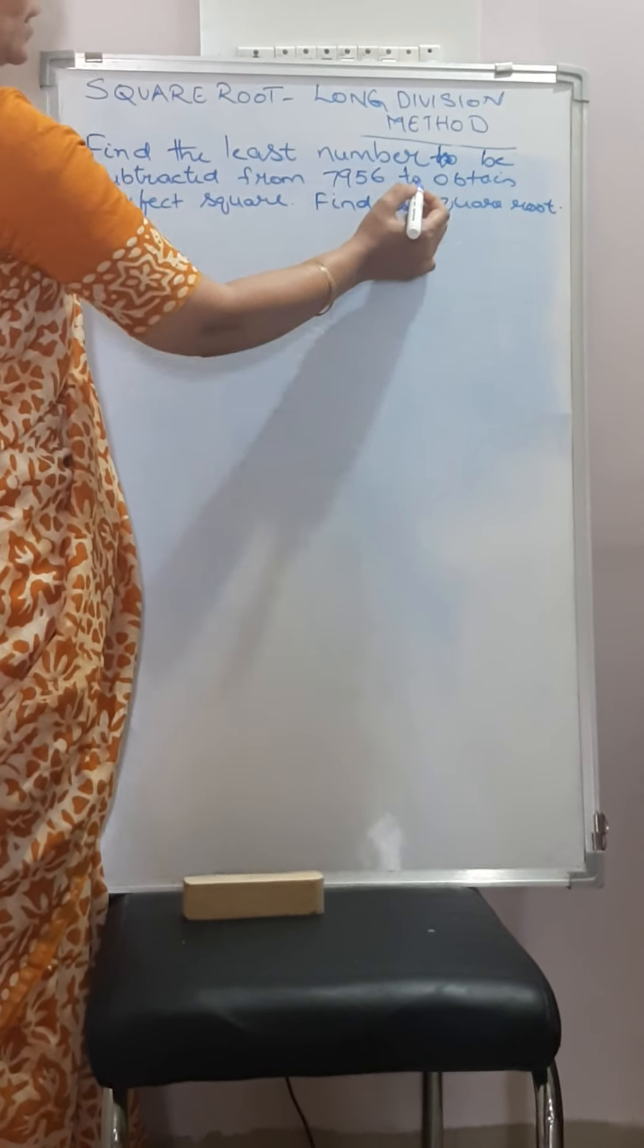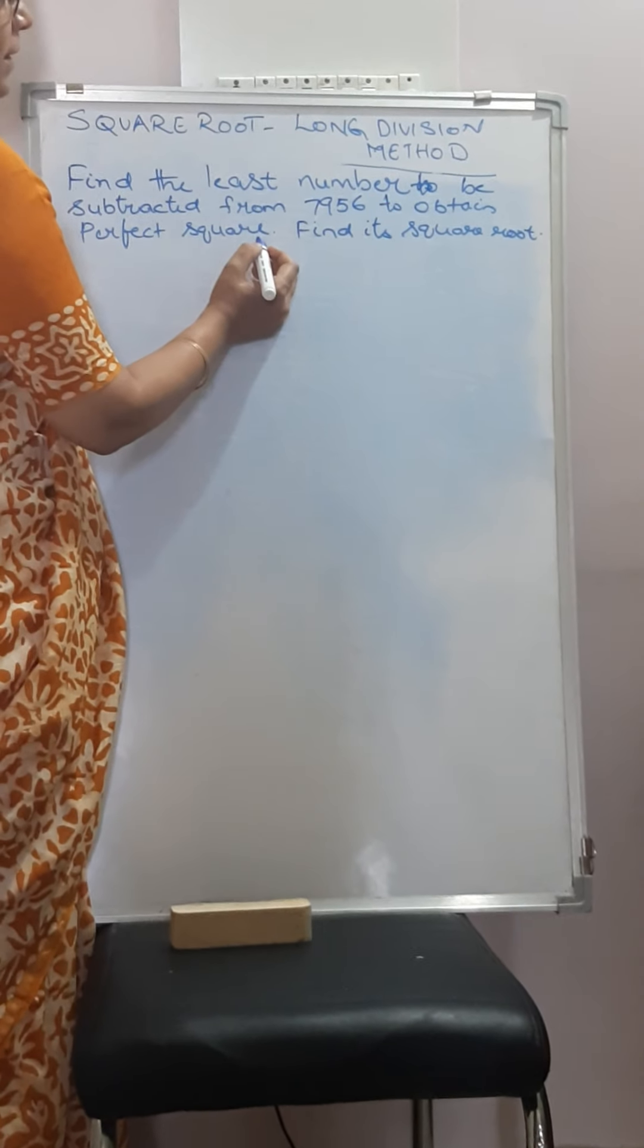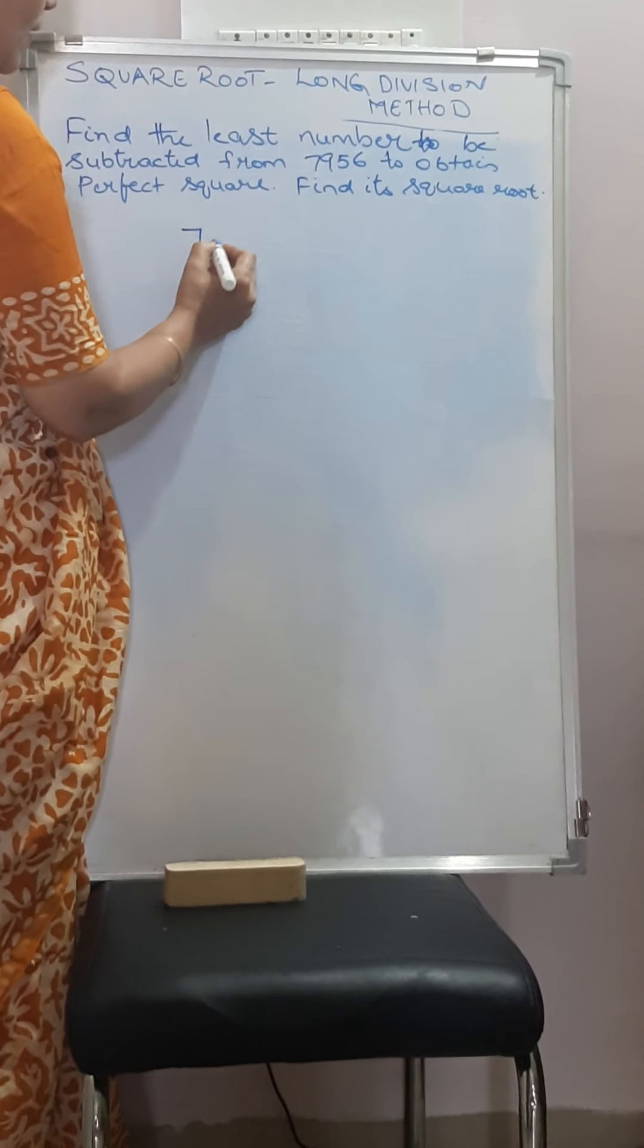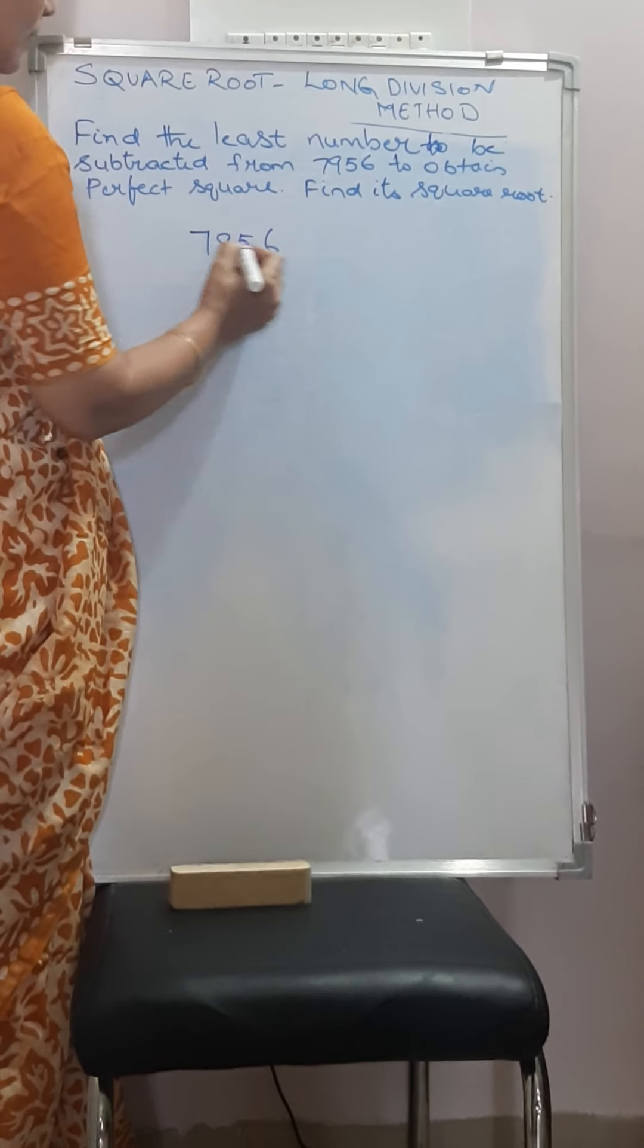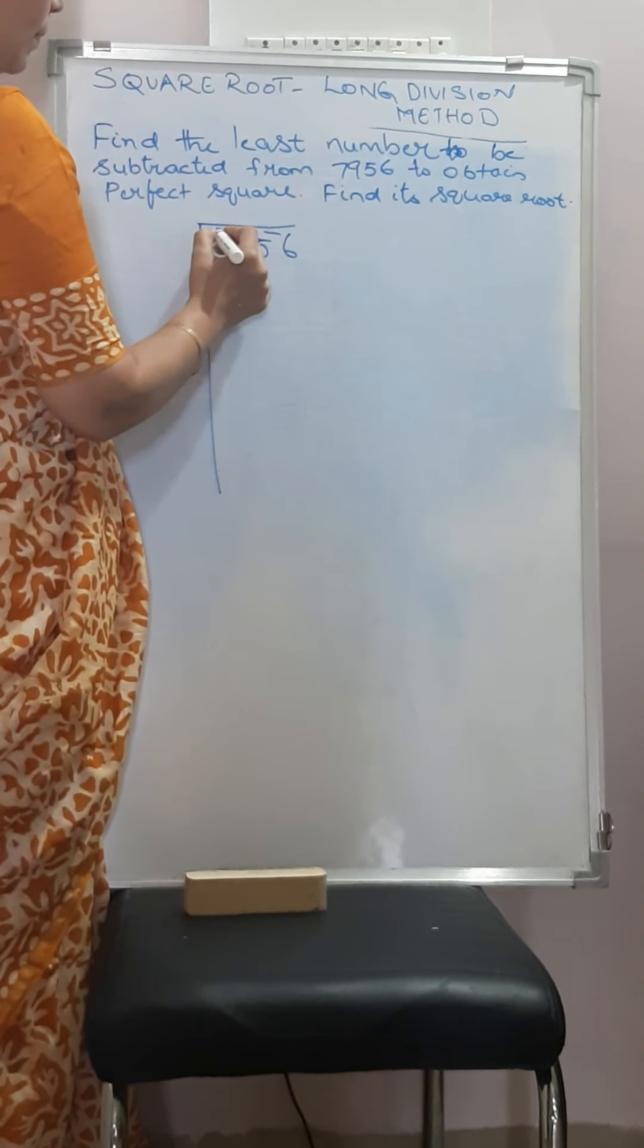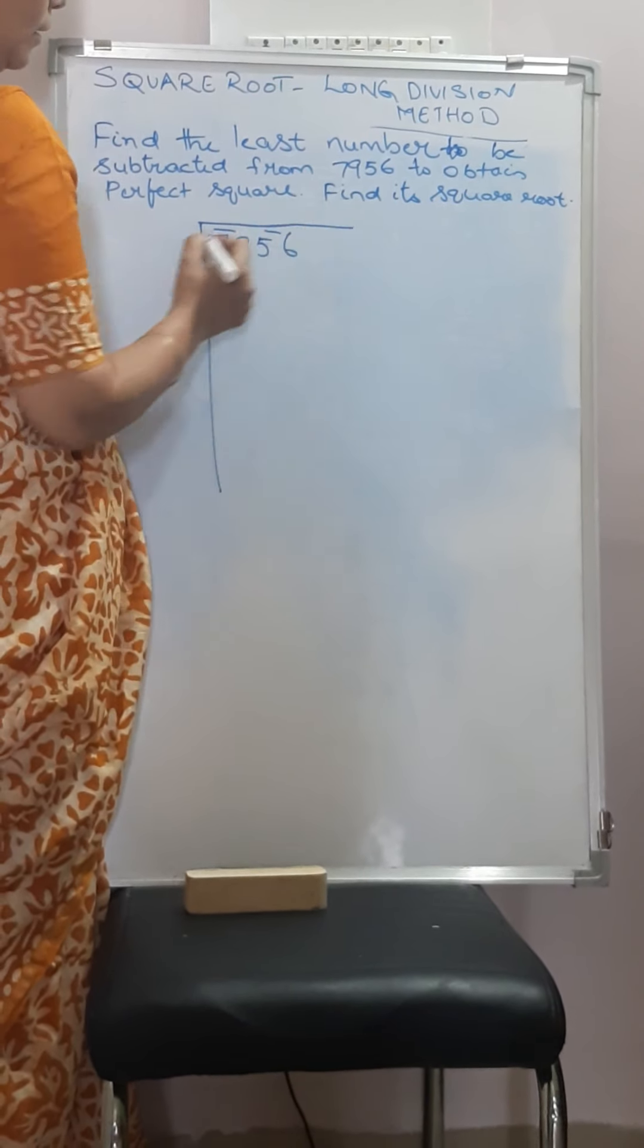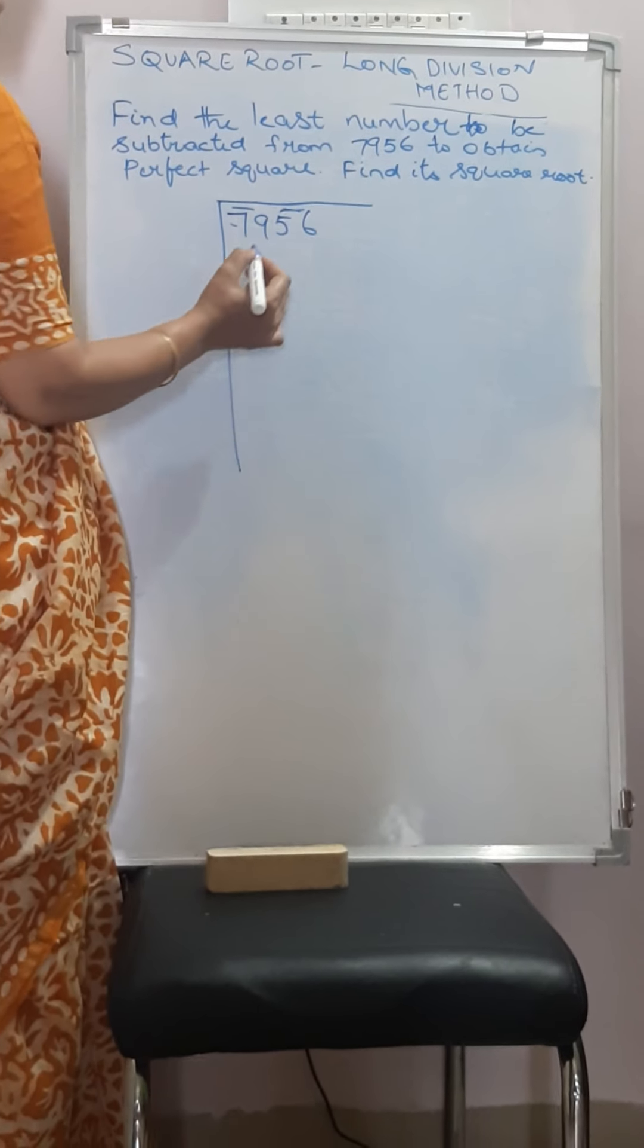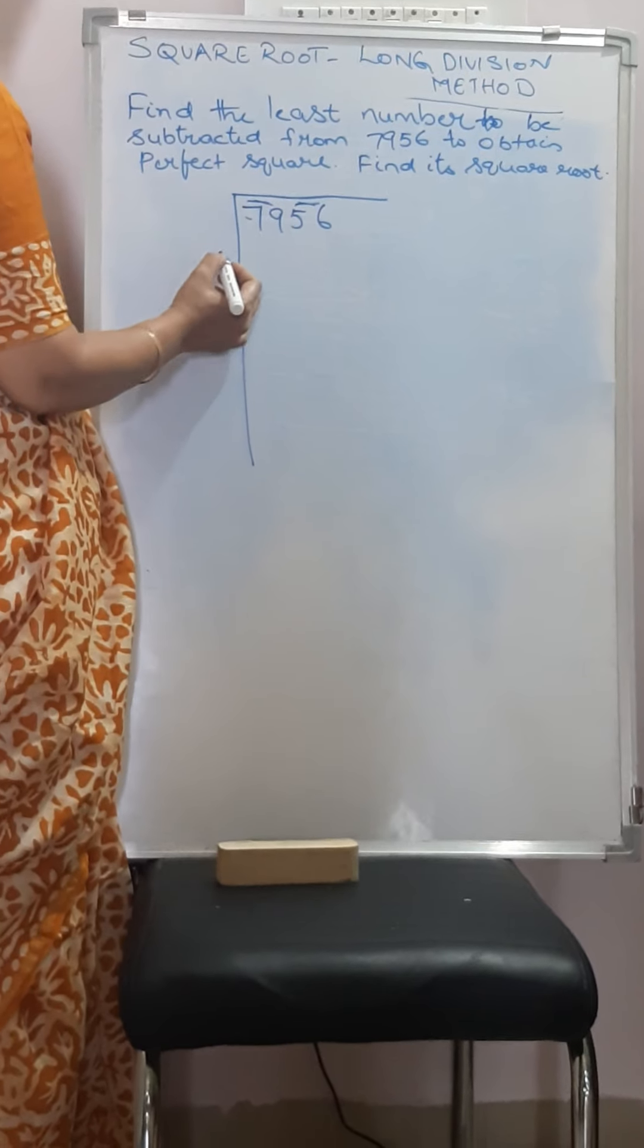From 7956 to obtain perfect square, find its square root. So 7956, pair the numbers. We will do it by long division method. 79 and 56, 1's and 10's digit, 100's and 1000's.